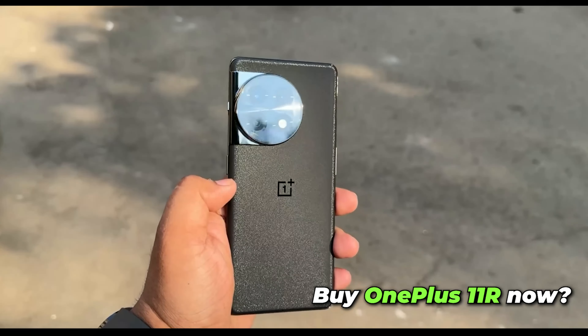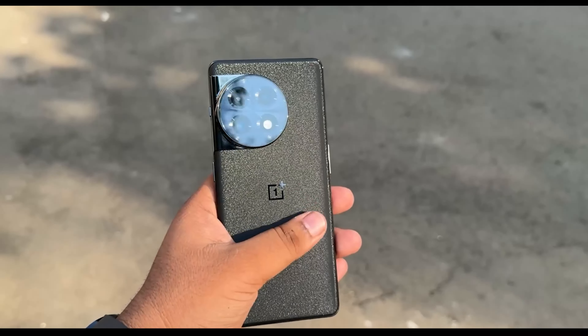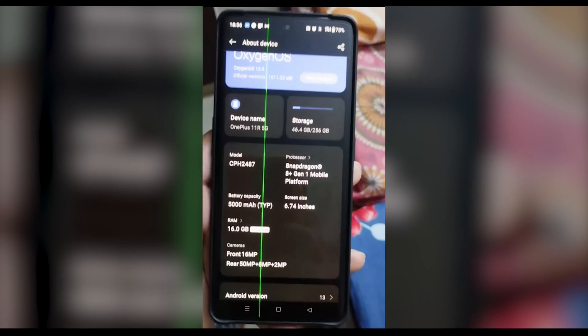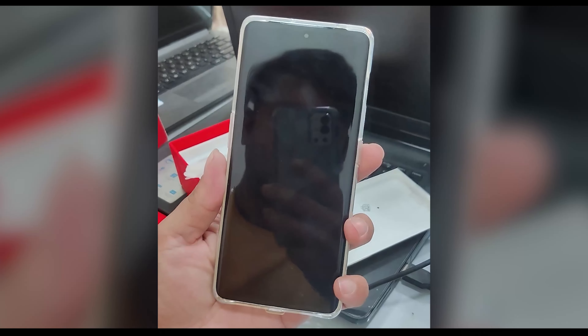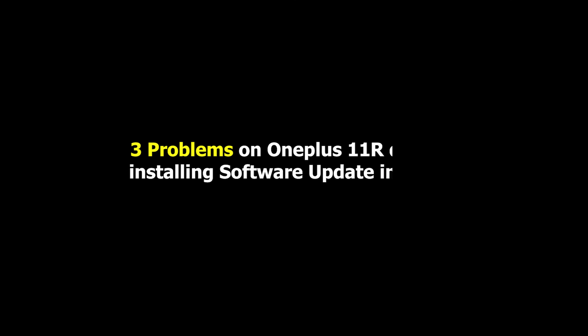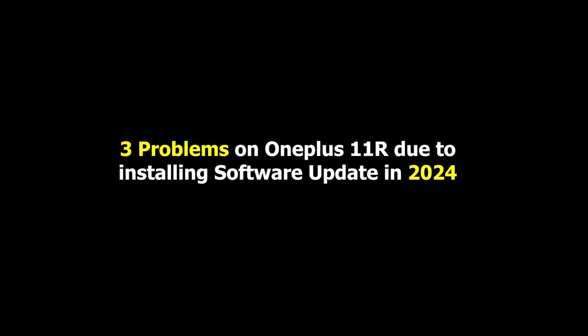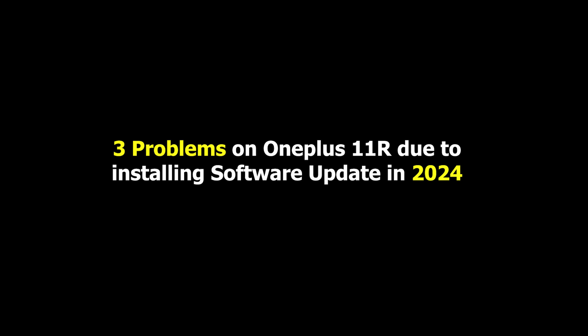A large number of OnePlus 11R users were affected by display problems like green line issue and purple line issue in 2023. But in this video, I am going to tell you about some problems that people are facing in 2024 after installing new updates.